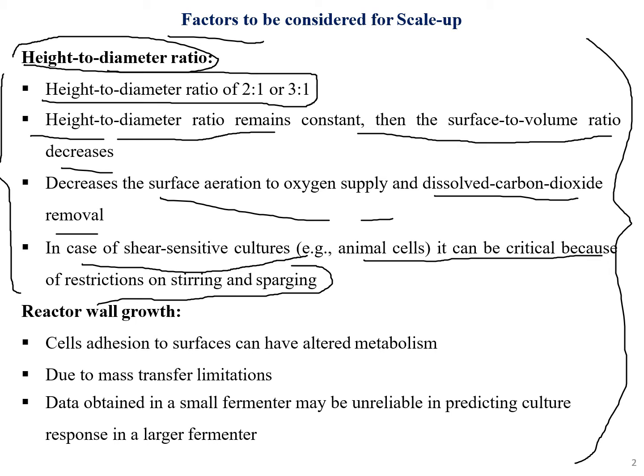In the case of shear-sensitive cultures such as animal cells, this can be critical because of restrictions on stirring and sparging. We need to carefully maintain the height and diameter ratio so that proper oxygen supply and aeration are maintained, especially for shear-sensitive cultures like animal cells.